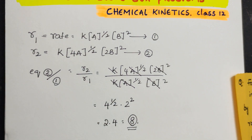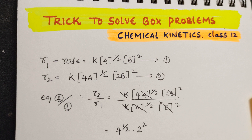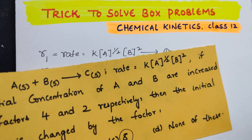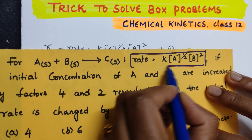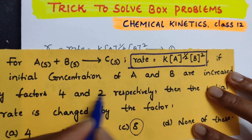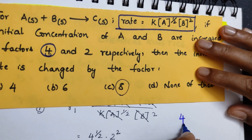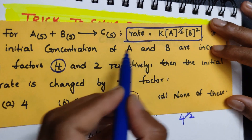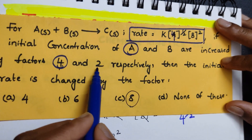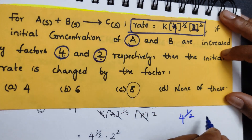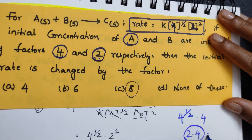In an examination, this full method takes time. Here's the shortcut: read the rate expression and directly substitute the increase factors. A is increased by 4 times, so put 4 in place of A — giving 4^(1/2). B is increased 2 times, so put 2, giving 2^2 = 4. Then 4^(1/2) = 2, and 2 × 4 = 8. You can do this in your head.